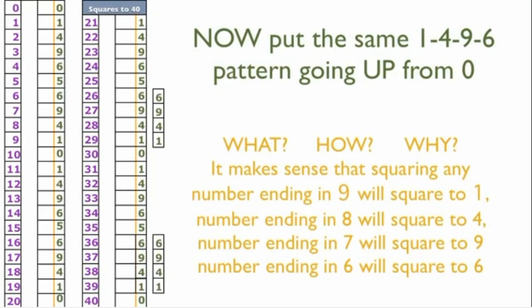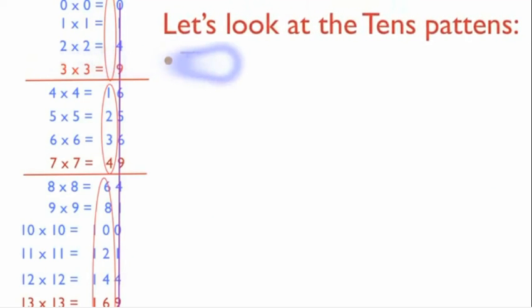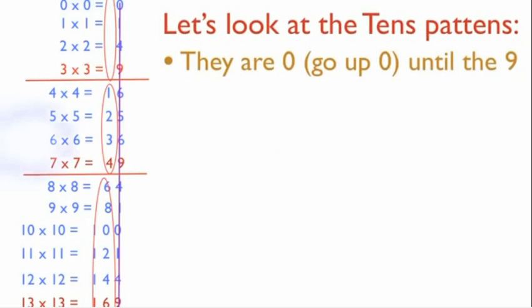Now we have to finish the 10s digit. Let us look at the 10s pattern. For digits 0 to 3, there is no 10s place, so we make it 0 or leave it empty. From the 4th digit to the 7th — that is the squares of 4, 5, 6, 7 — the 10s place is incremented by 1, giving the series 1, 2, 3, 4. From 8 to 13, the number is incremented by 2, giving the series 6, 8, 10, 12, 14, 16.